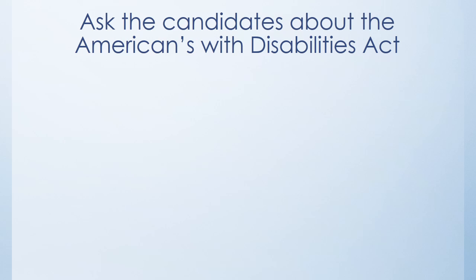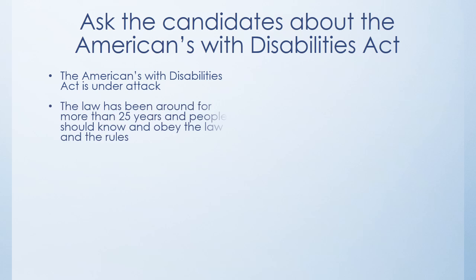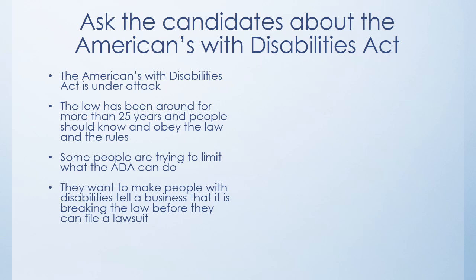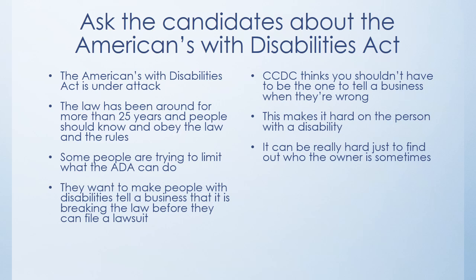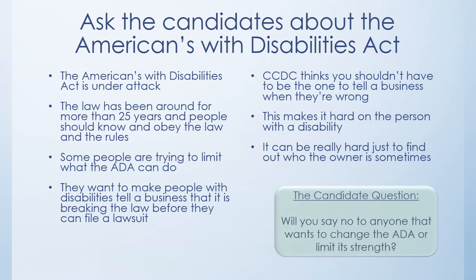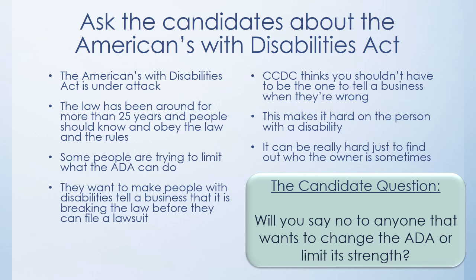Ask the candidates about the Americans with Disabilities Act. The ADA is under attack — the law has been around for more than 25 years and people should know and obey the law and the rules. Some people are trying to limit what the ADA can do. They want to make people with disabilities tell a business that it is breaking the law before they can file a lawsuit. CCDC thinks you shouldn't have to be the one to tell a business when they're wrong — this makes it hard on the person with a disability, and it can be really hard just to find out who the owner is sometimes. Candidate question: Will you say no to anyone that wants to change the ADA or limit its strength?